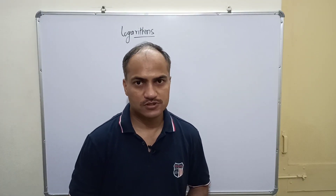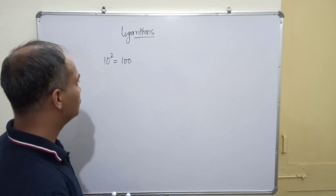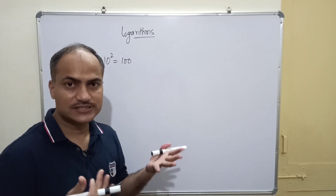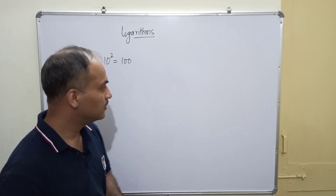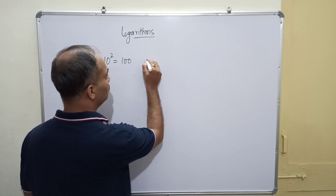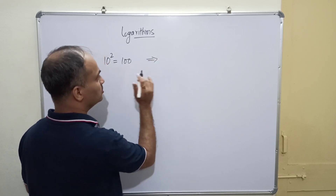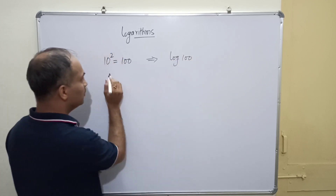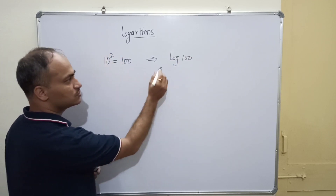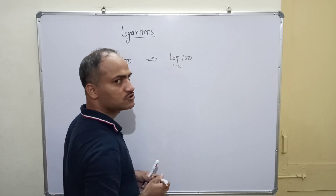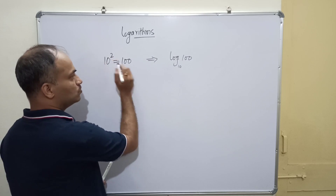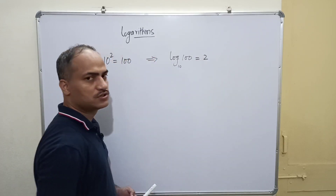Let us start the topic: logarithms. What do we mean by logarithms? We all know that 10 to the power 2 is equal to 100. We can write this same information as log base 10 of 100, where the base is 10 and the exponent is 2, so the value of this expression is 2.